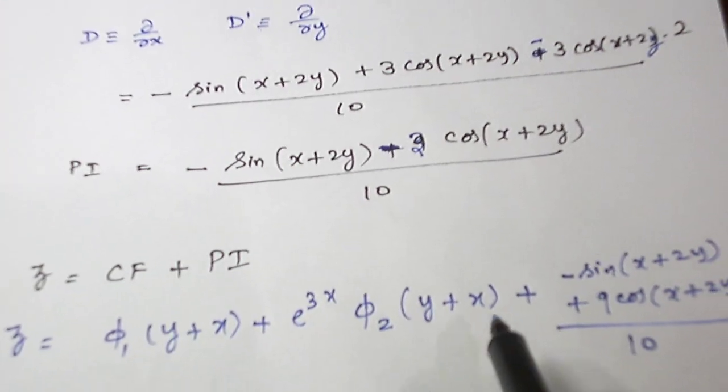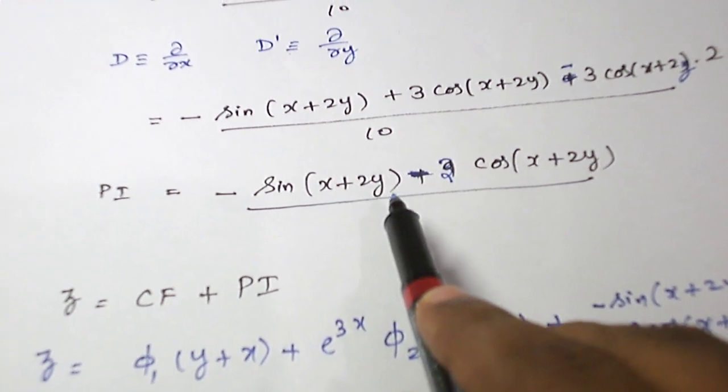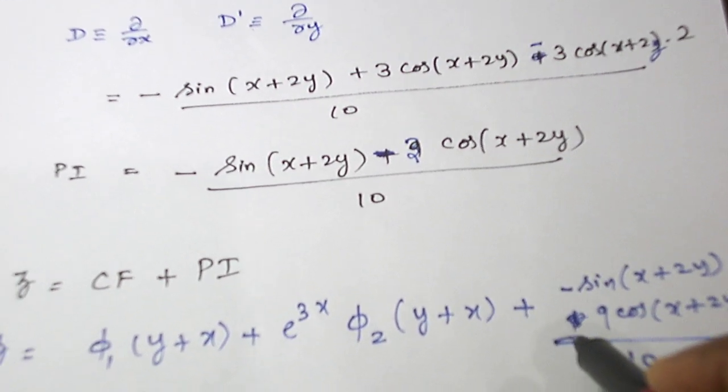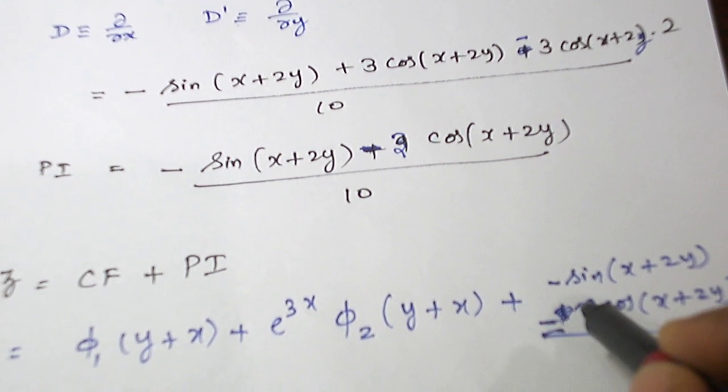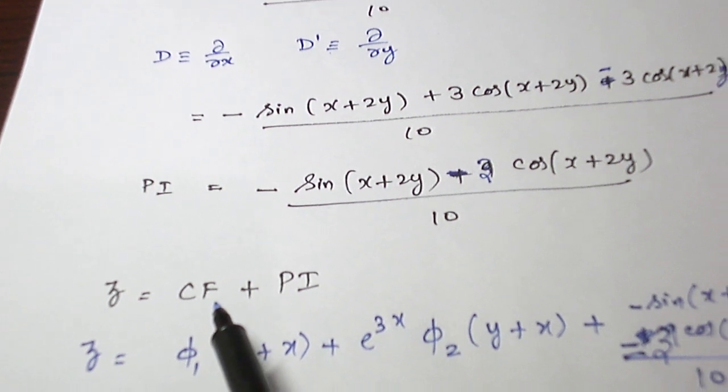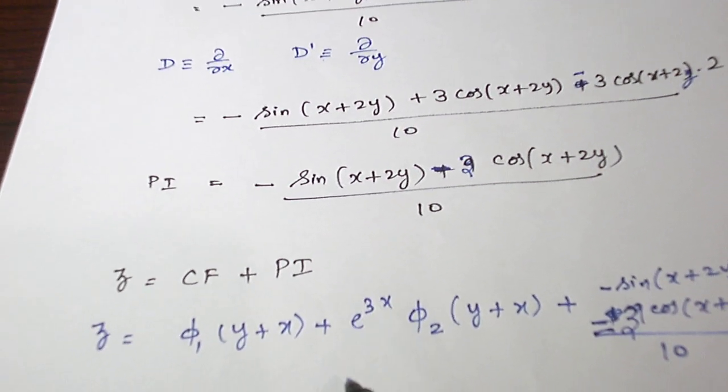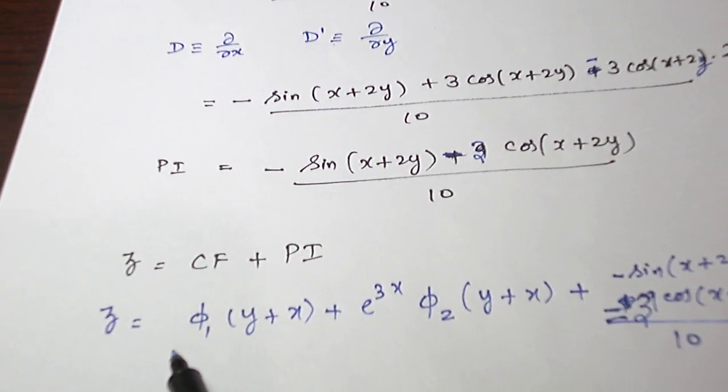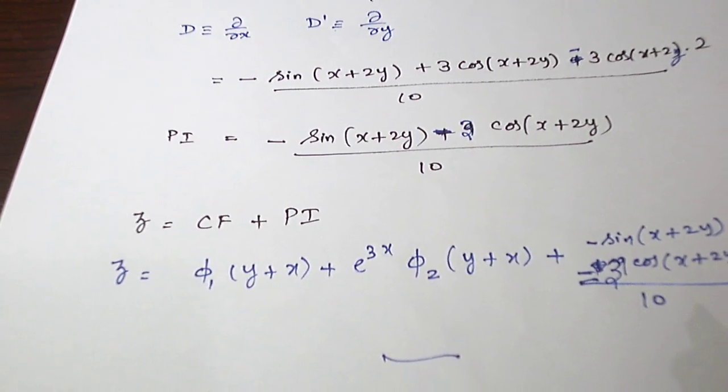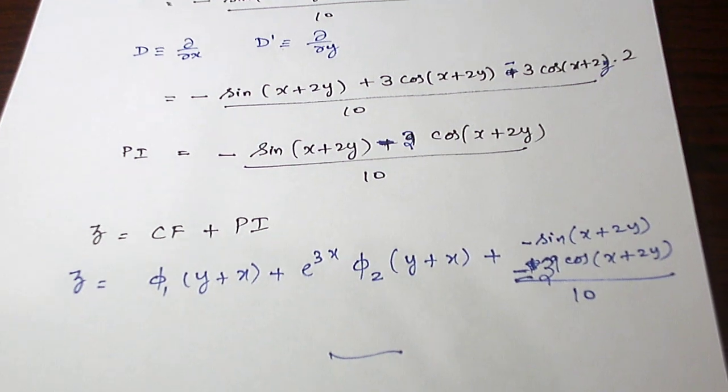So the particular integral is minus sine of x plus 2y minus 3 cos of x plus 2y divided by 10. And when we add complementary function plus particular integral, we will get the solution. With this, this problem is over. Let us see another problem in the next video. Thank you.